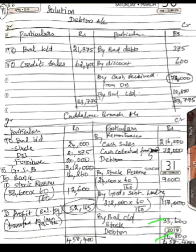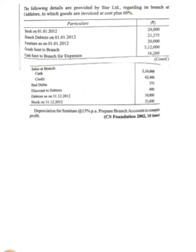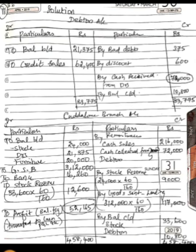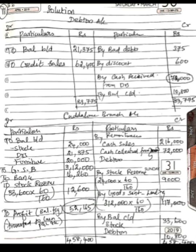Now we must remove loading and create a stock reserve for opening and closing stock. The invoice price is cost plus 60%, so the loading fraction is 60/160. For opening stock: 24,000 × 60/160 = 9,000. For closing stock: 33,600 × 60/160 = 12,600. For goods sent to branch: 3,12,000 × 60/160 = 1,17,000. Record these on the opposite side respectively.